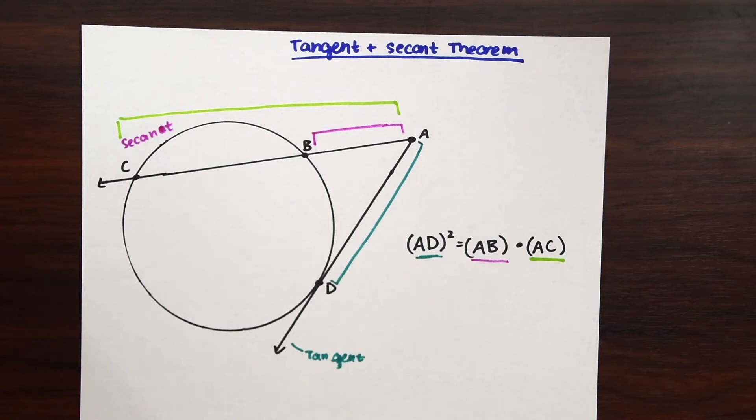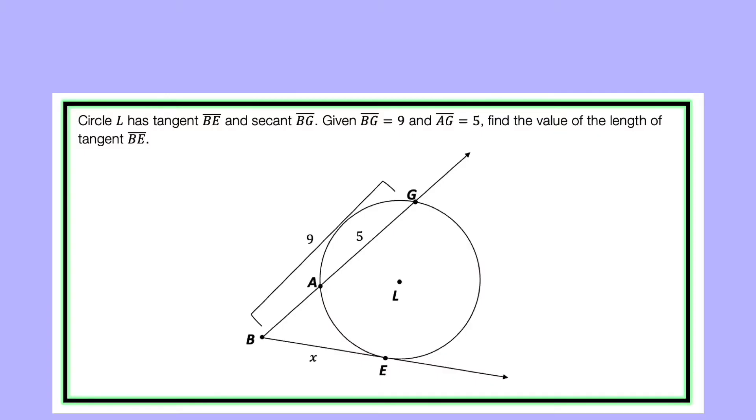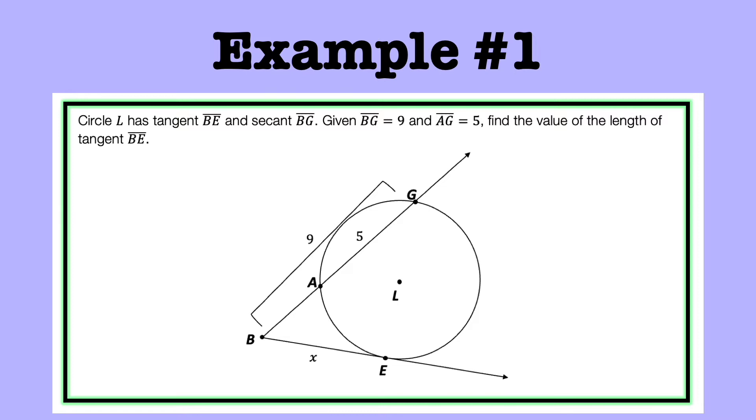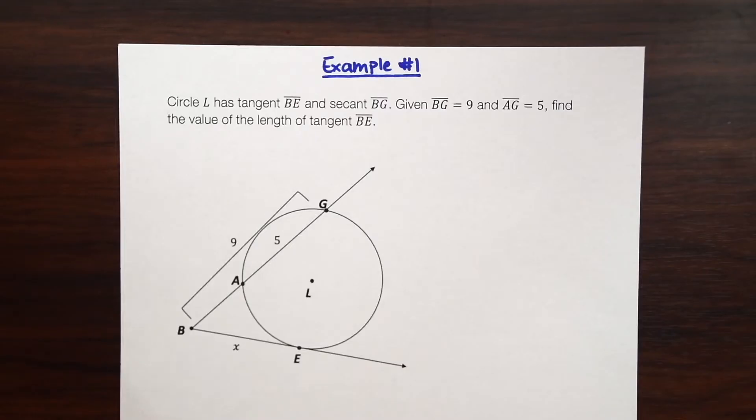So now that we're more familiar with our theorem let's see it in action with our first example. Circle L has tangent BE and secant BG. Given BG equals 9 and AG equals 5, find the value of the length of tangent BE.